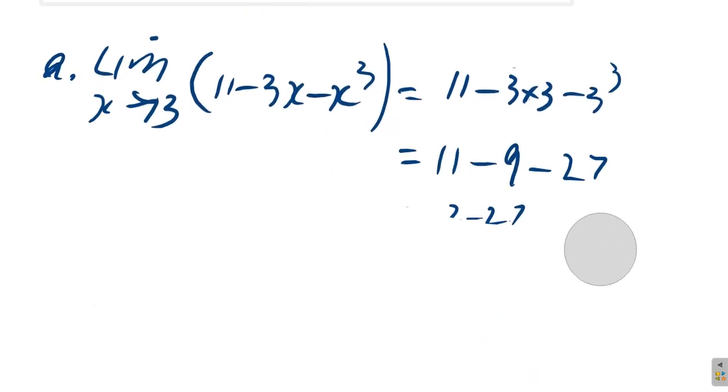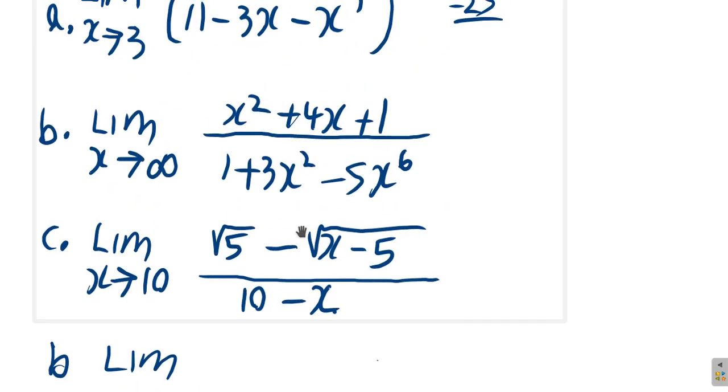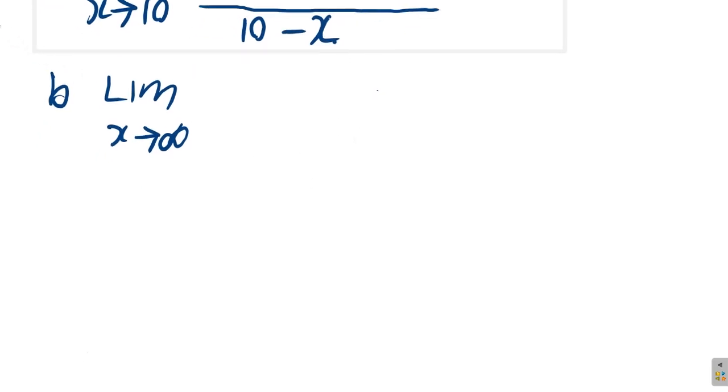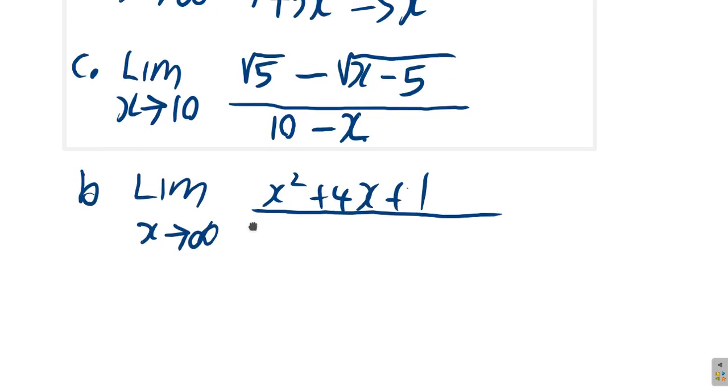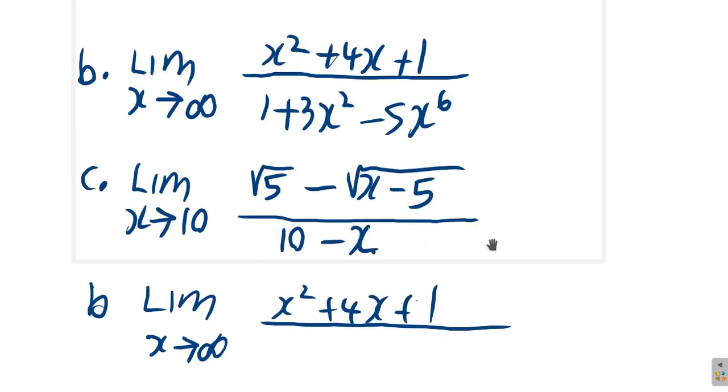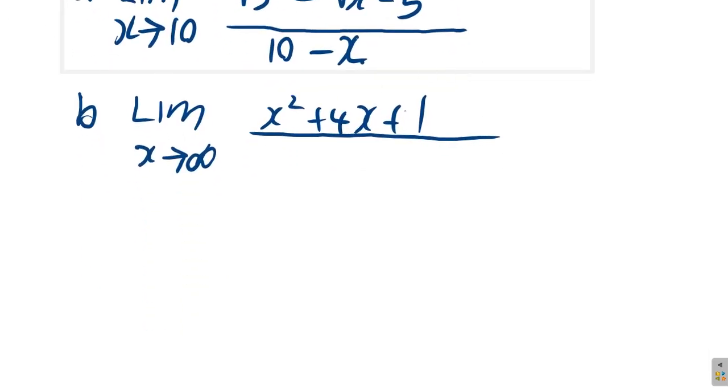Let's just erase the working here to make some space. B, the limit as x tends to infinity of x squared plus 4x plus 1 divided by 1 plus 3x squared minus 5x to the 6.